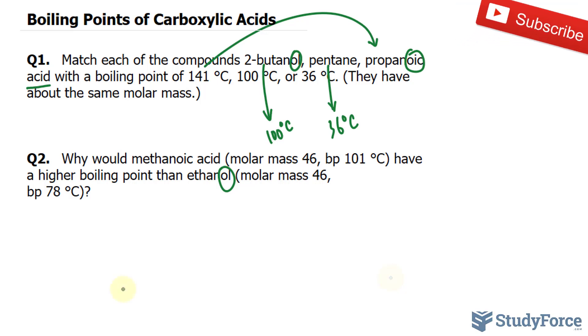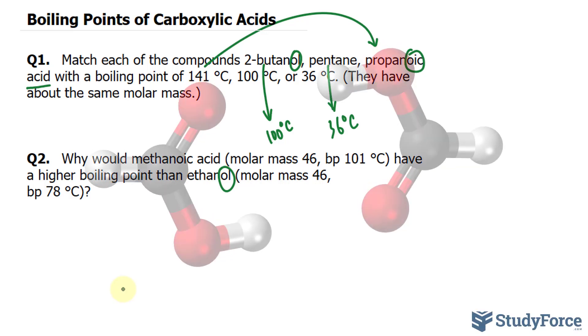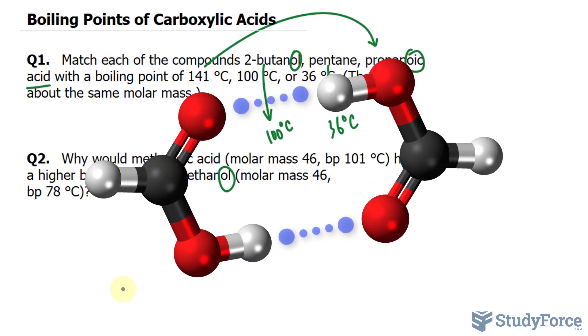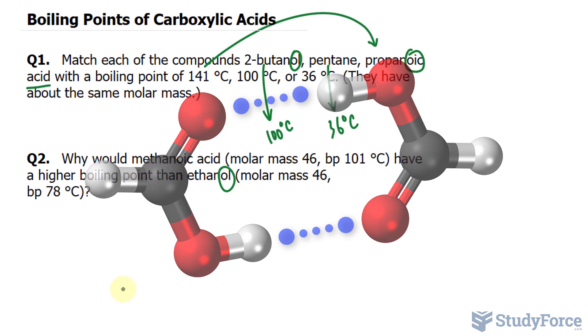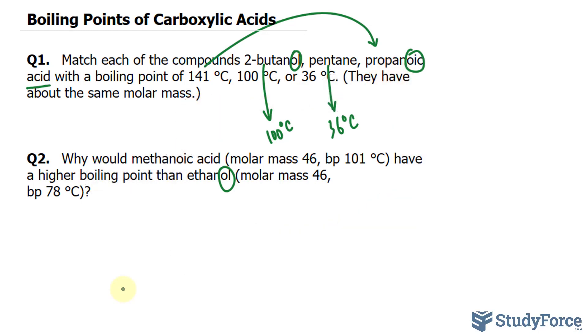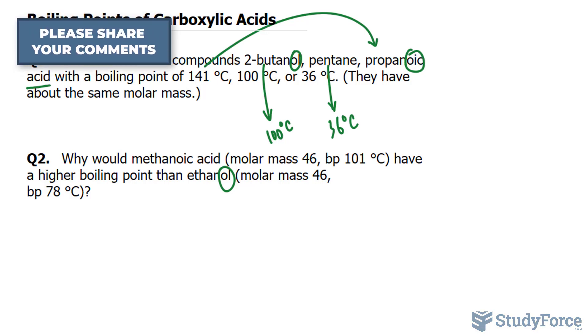But that's not enough to explain why methanoic acid has a higher boiling point. So, referring back to what I mentioned, two methanoic acid molecules will form dimers, which give an effective molar mass that is double that of a single acid molecule. And this is why more heat is needed to boil methanoic acid.